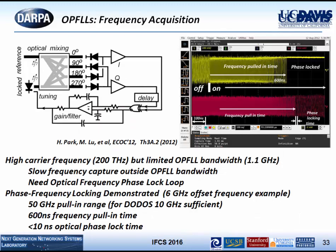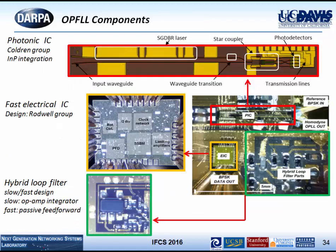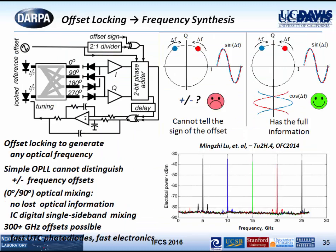Demonstration of the 1 GHz loop bandwidth showed that you can turn the reference laser off and on and achieve frequency locking and phase locking within about 600 nanoseconds — very fast locking. The OPFLL components include integrated electronic ICs with a hybrid loop filter. The PIC integrates the tunable laser with the optical hybrid and four detectors — all on chip. With this very compact configuration, they achieve 1.1 GHz loop bandwidth. The four-phase detection allows unambiguous detection of whether the reference laser is on the red or blue side of the frequency offset, enabling tuning in either direction.